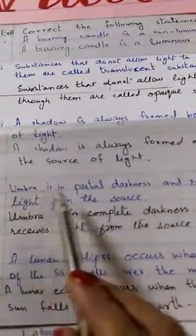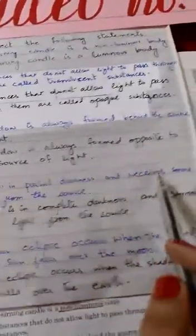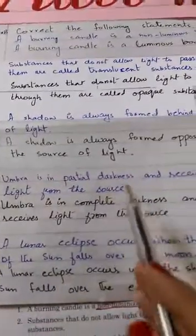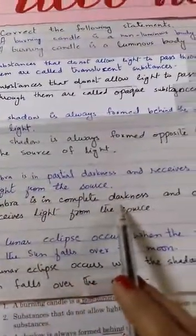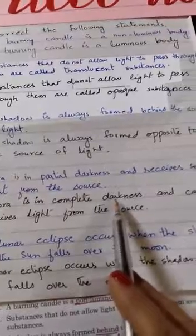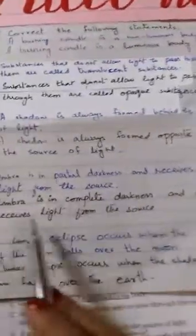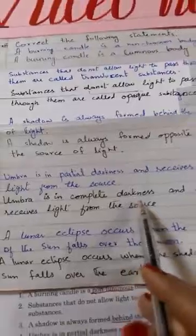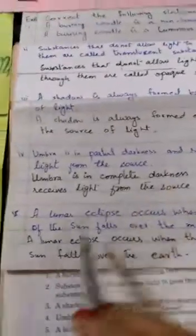Number 4 — umbra is in partial darkness and receives some light from the source. The correct answer is: umbra is in complete darkness and cannot receive light from the source. It does not receive light at all — that is why it is total darkness.